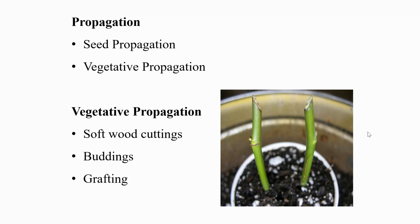Clove is propagated through seed and vegetative means, including soft wood cuttings and buddings. The approach method of grafting using its own rootstock has been successful. Generally, however, clove is propagated mainly through seeds.